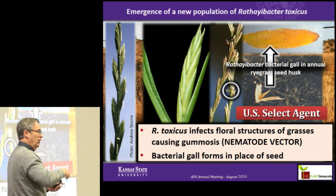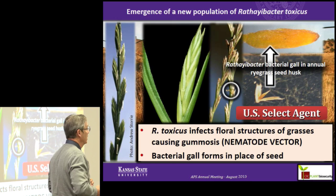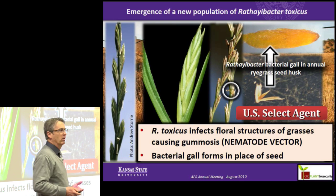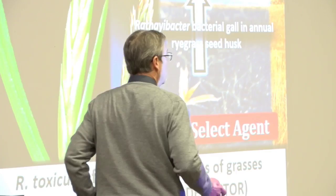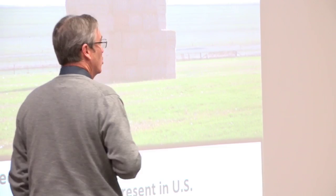This bacterium produces a seriously nasty toxin called tunicamycin, and it's very toxic to livestock and wildlife. Every year in Australia, livestock die. Over the course of the last 20 years, a couple hundred thousand sheep and cattle have died from ingesting this toxin. So we don't want this in the United States. The challenge is that the vector — the nematode — is present in the United States, and susceptible hosts are present in the United States. So if it gets in, it has a pretty good chance of getting established and spreading. The U.S. imports annual ryegrass seed — that's the main host — so we already have a pathway that would allow this organism to get into the United States. The threat: about a hundred billion dollar livestock industry in the United States.